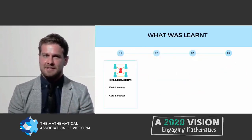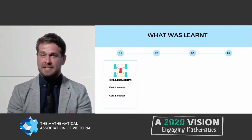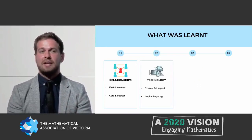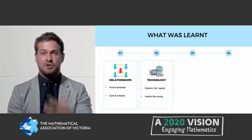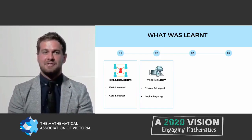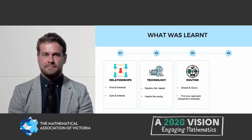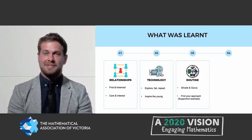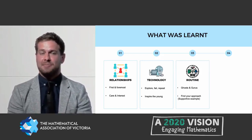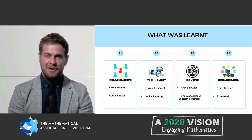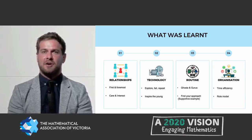To sum up what was learnt: first, relationships are first and foremost — showing care, interest and investing time in creating relationships over content is really crucial. Second, technology — try and fail, keep repeating until you find what works for you, and continue to inspire the young generation. With routine, the approach that worked to get more gurus than ghosts was a supportive one. And with organisation, being really time-efficient and organised gives you the opportunity to role-model what you expect from students.